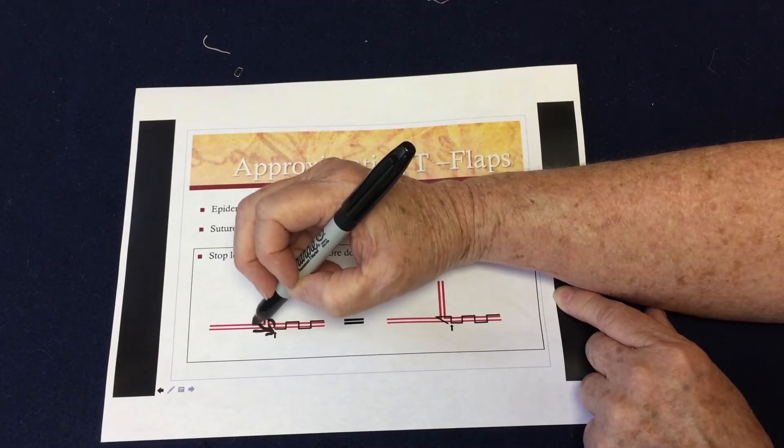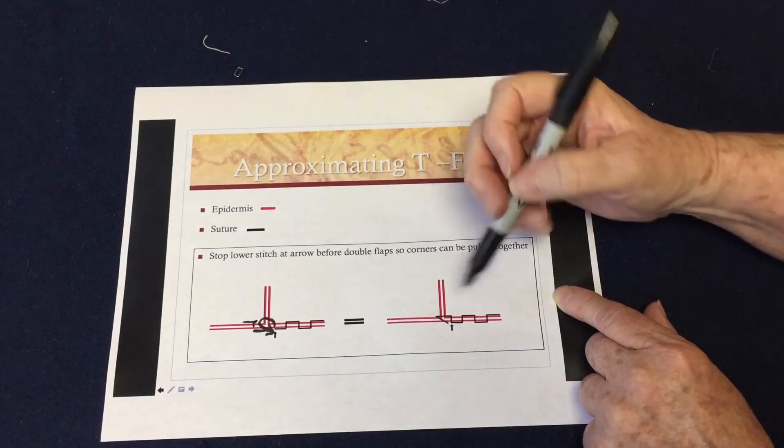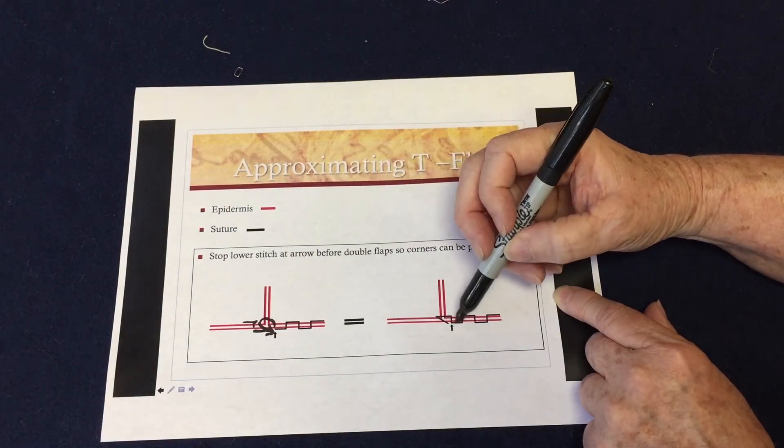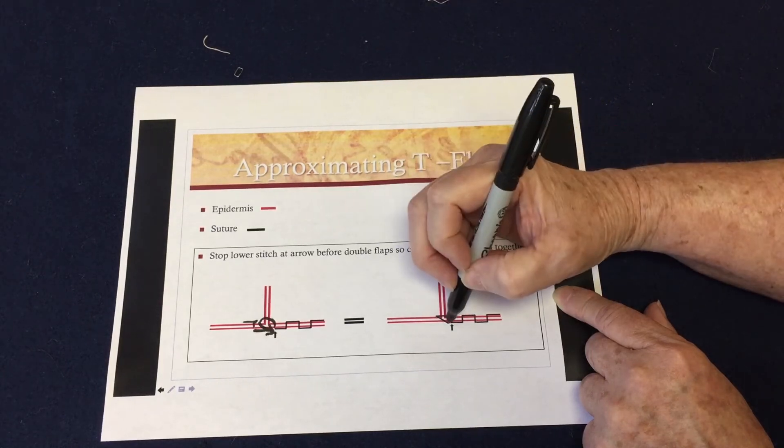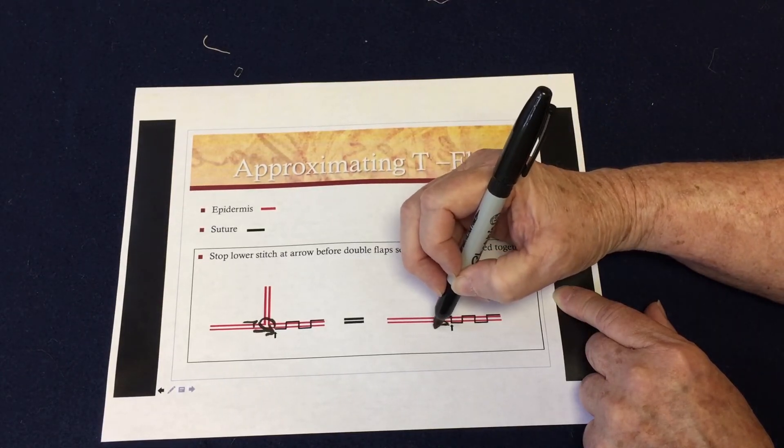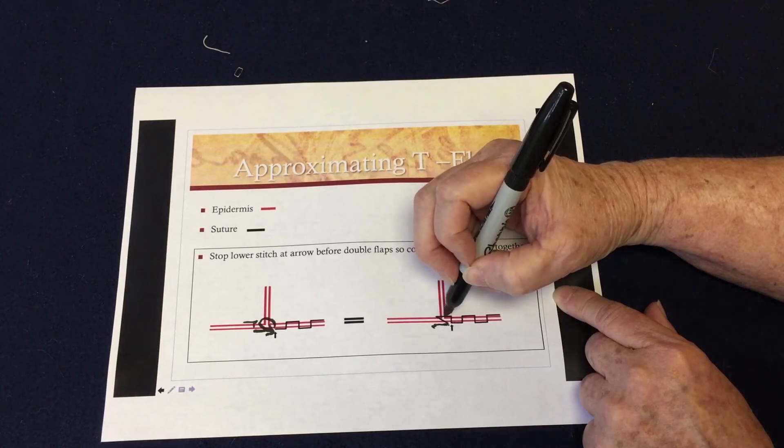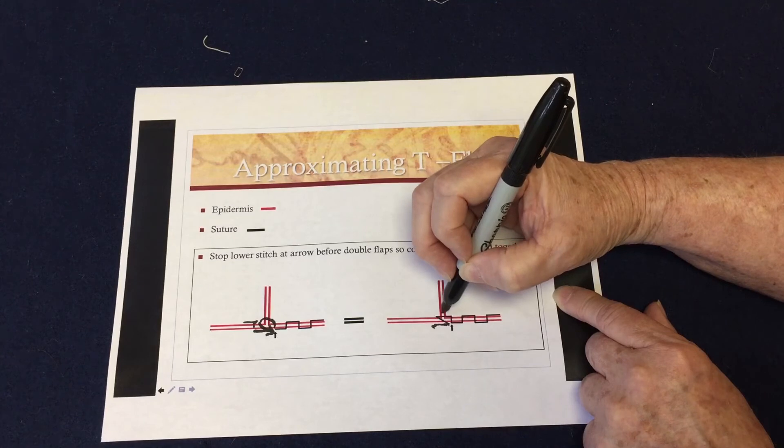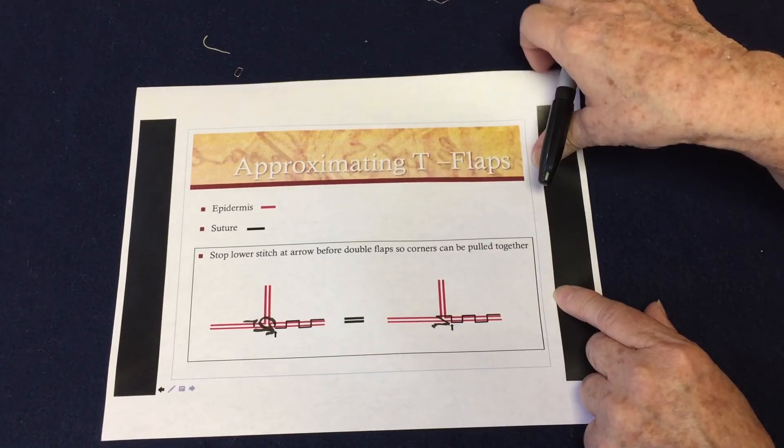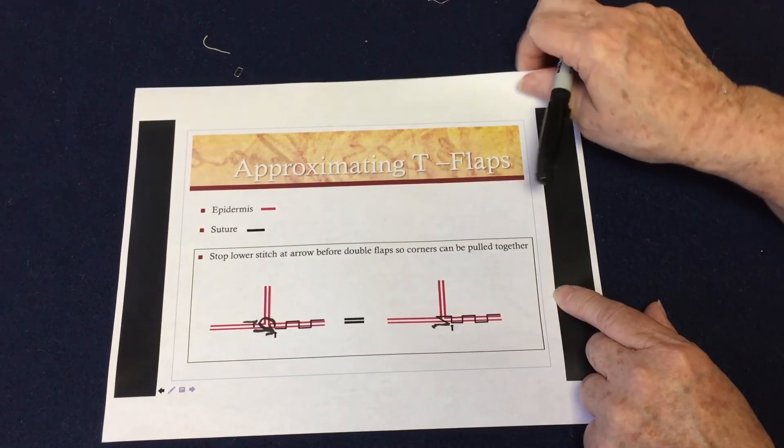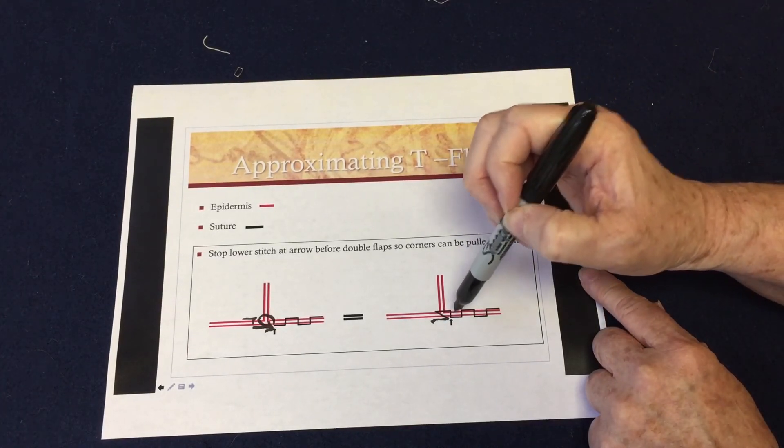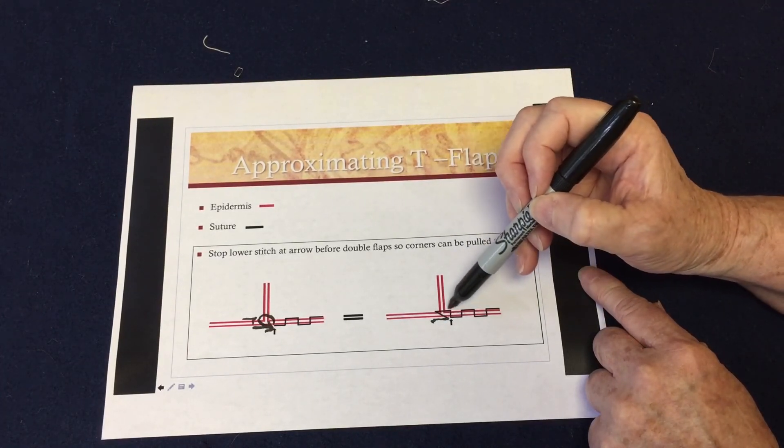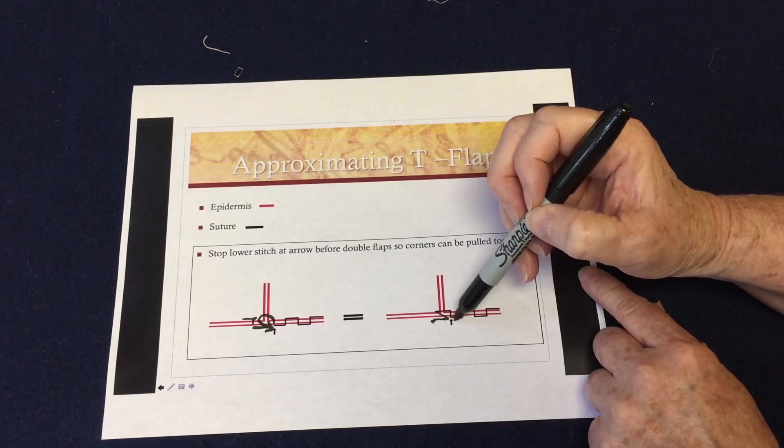And then you would start going back over again. What that does is, as you go along and you stop here, then you go through the double flaps, and then you come back behind it. When you pull this stitch tight here, it wants to pull this all back to here, so it'll pull those two edges together and you'll get a T-flap that meets. So very important, just to stop before you get to that T, then go through the T, and then come back on it.